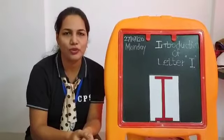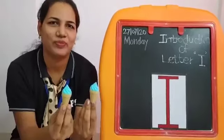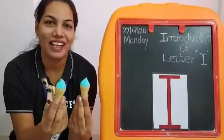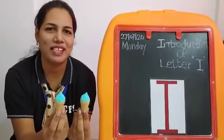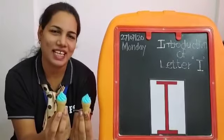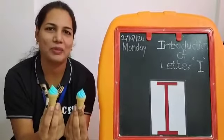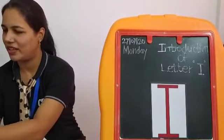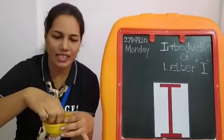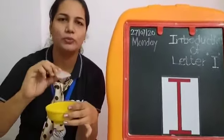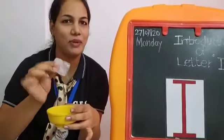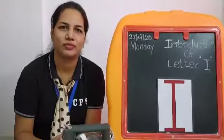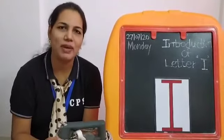Now I will show you some objects. See children, what is in my hand? Ice cream. Aapko pasand hai ice cream? So, letter I say ice cream. Next object is ice cube. Aapko pata hai, aapke freezer mein hogi ice cube. Hai na? See children, what is in my hand?